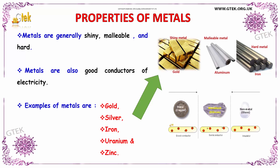Let us move to some of the properties of metals. Metals are generally shiny, malleable, and hard. Metals are also considered to be good conductors of electricity.